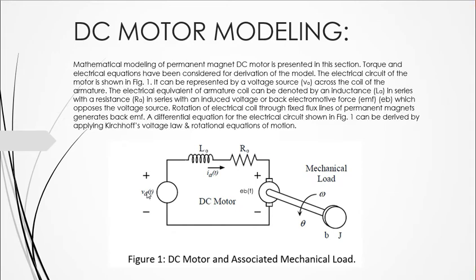VA is the external source voltage. LA and RA are the inductance and resistance of the armature respectively, and IA is the current flowing in this branch. This covers the electrical side. On the mechanical side, we have two torques and basically three forces acting.